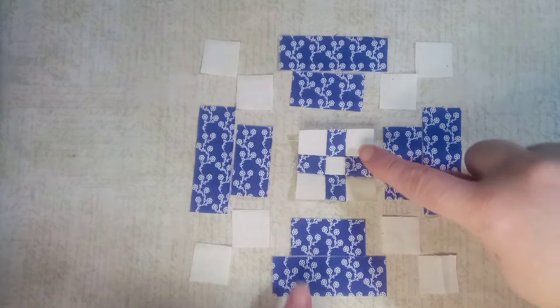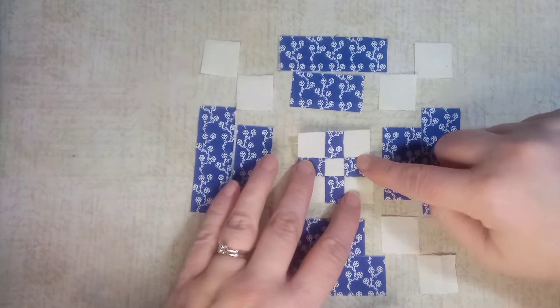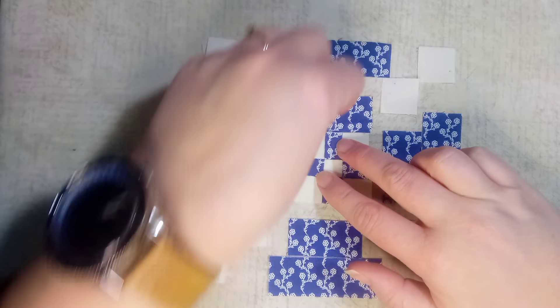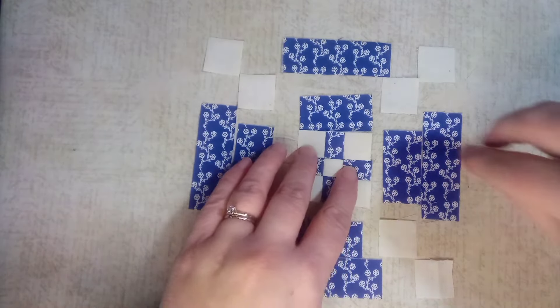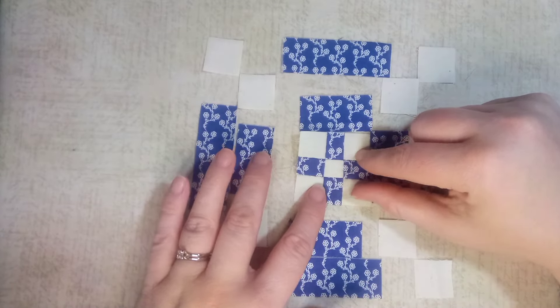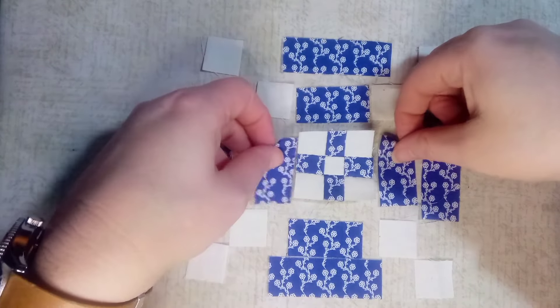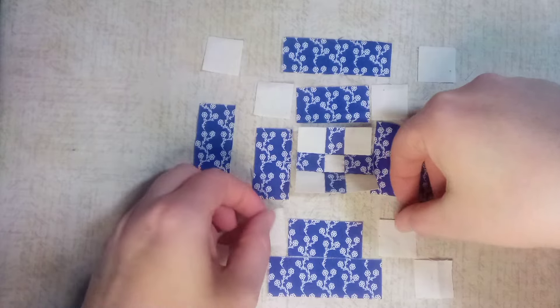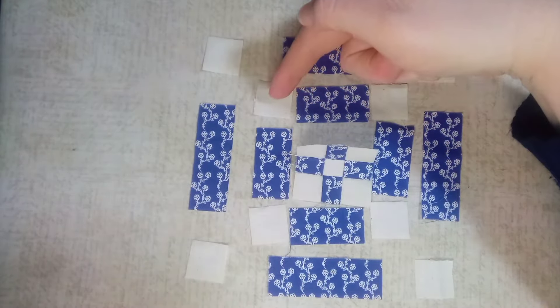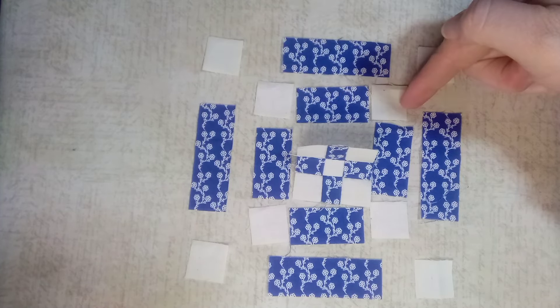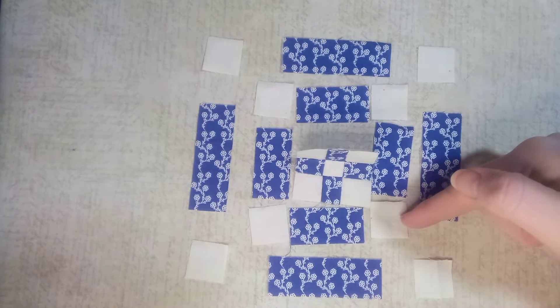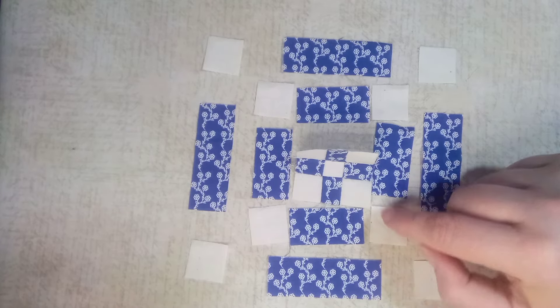You can see now that once I've got this center nine patch stitched in, these little rectangles that are two inches long will now line up really well with each of these sides. So the next thing I'm going to do is sew these next sections into rows. So I'm shifting these a little bit. So what I'll do is sew these three pieces together, and then these three together, and then these three together.